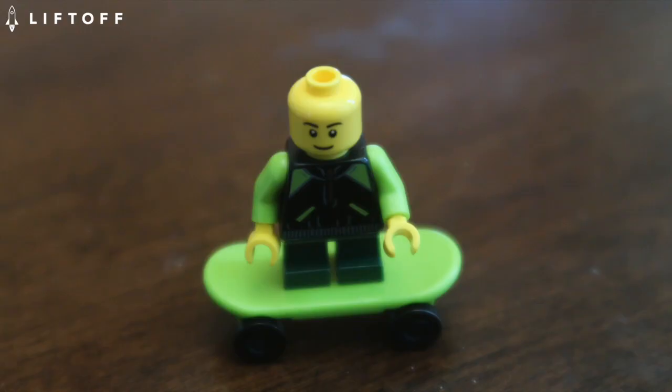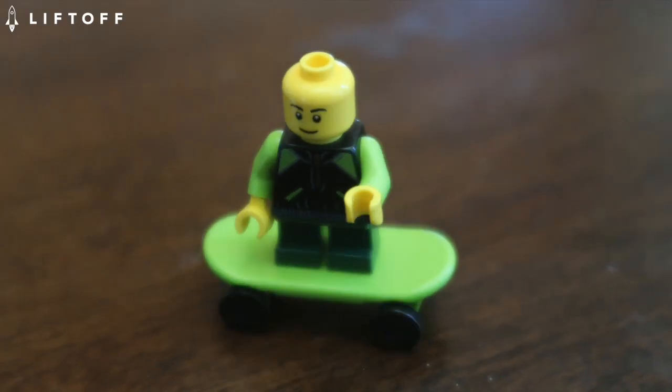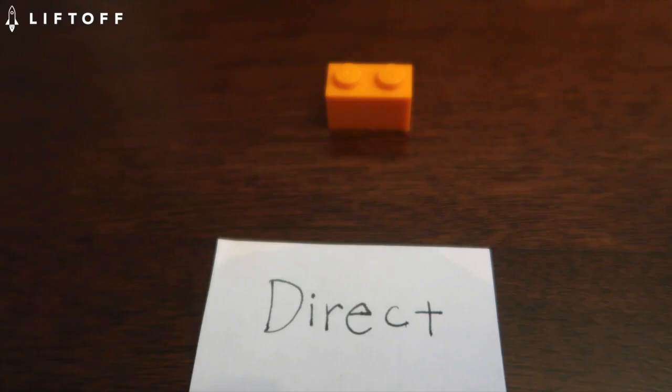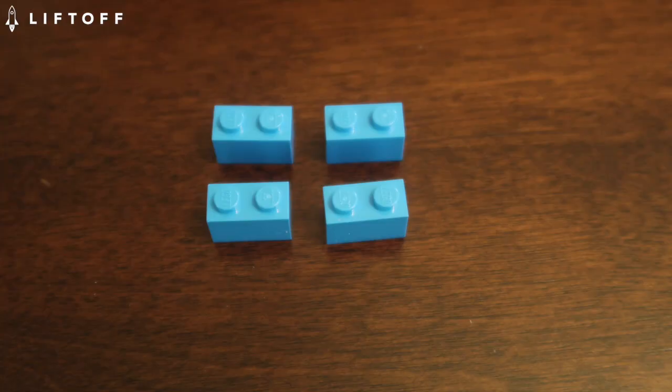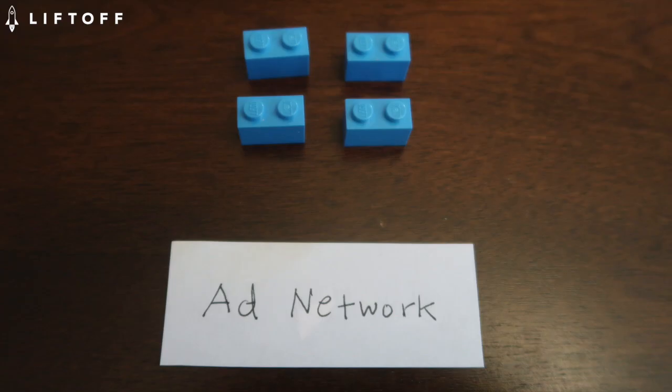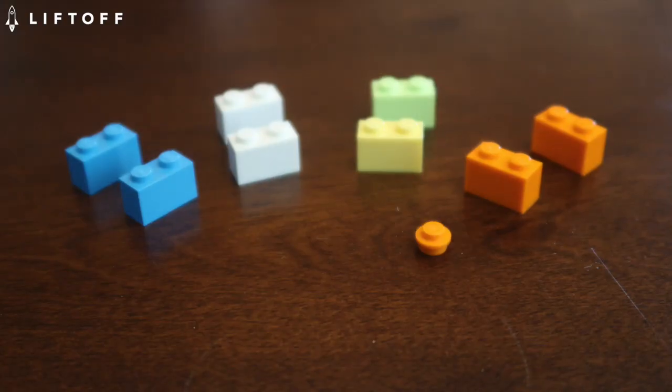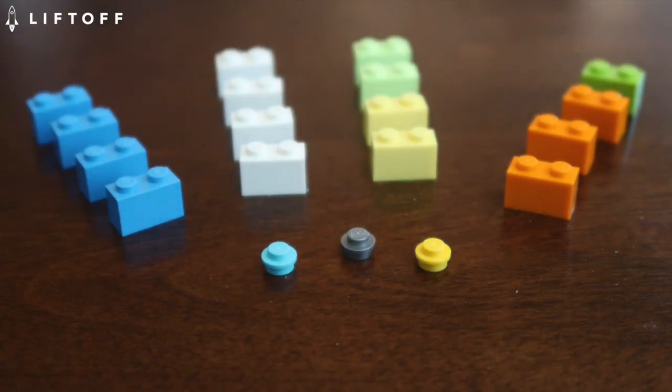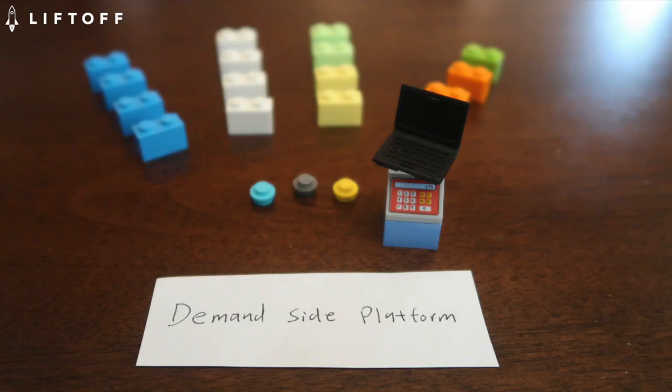So which one do you think is best for me? Well, depends on what you're looking for. If you want to advertise in a specific app, direct is the way to go. If you want to advertise in a specific vertical or region, ad network is the way to go. If you want scale and real-time bidding, ad exchange is the way to go. If you want scale, real-time bidding, and automation, DSP is the way to go.